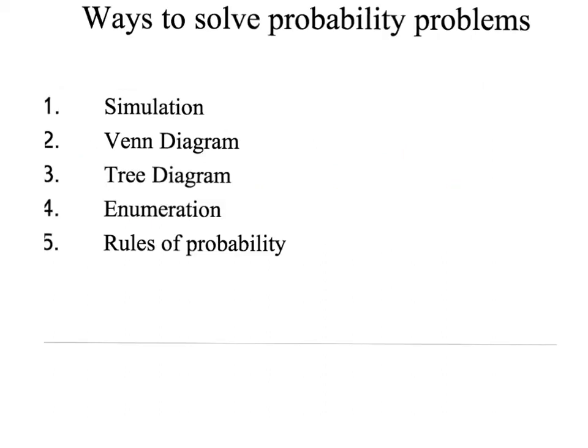What we're going to talk a lot about in this section is ways to solve various probability problems. I'm going to say that there are five ways. The first way is simulation, which we talked about in the previous section 6.1. We're going to spend the bulk of time today talking about Venn diagrams and tree diagrams, and then later on we'll talk about enumeration, and rules of probability is basically 6.3. We're going to begin talking about Venn diagrams and tree diagrams.